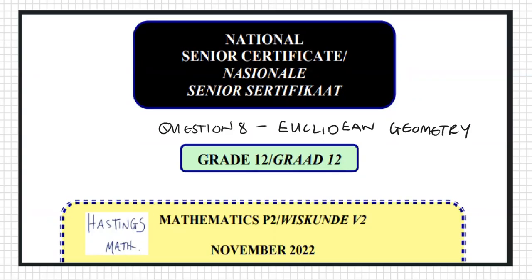This is the NSE DBE, Grade 12, Mathematics Paper 2, Question 8, which is Euclidean Geometry.